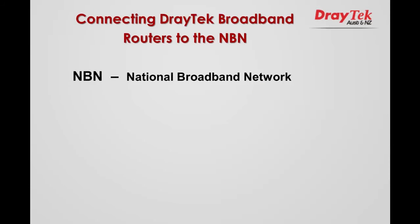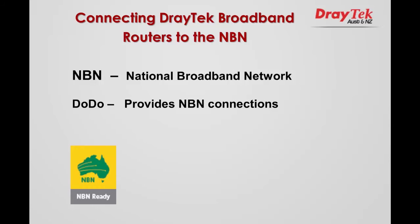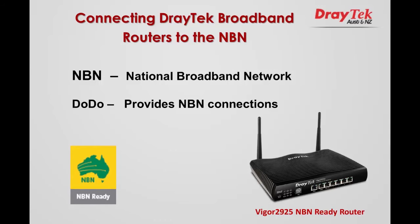We will show you how to configure the Vigor 2925 for the NBN network. The National Broadband Network is currently being rolled out in Australia. Dodo is one of the internet service providers offering NBN connections, and a broadband router is required. In this video, we describe the process to configure DrayTek's broadband router, the Vigor 2925, to connect to the Dodo NBN service.